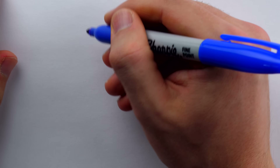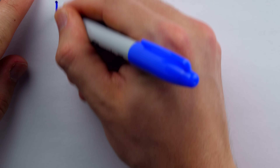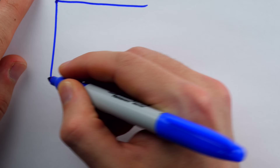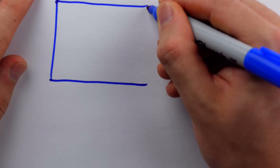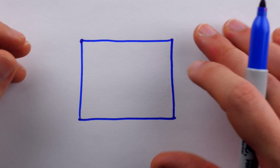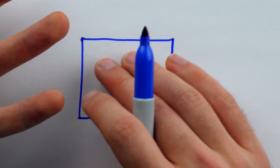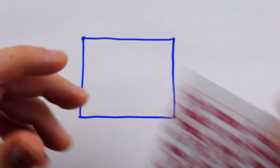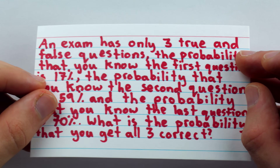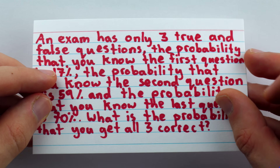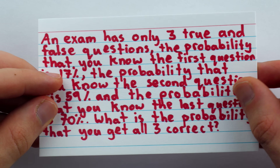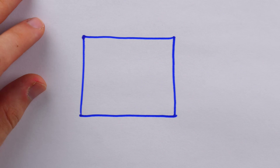We can use a little picture to sketch out how the student perceives this problem. For any question, we represent the possible responses of the student in a box. Let's say the area of the box is 1, representing the 100% chance that something happens — either they answer the question correctly or incorrectly. For the first question, there's a 17% chance we know the answer, which is a small part of this square.